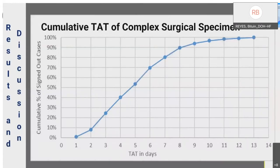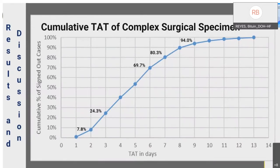Only 8% of complex specimens were signed out in 2 days, 24% in 3 days, 17% in 6 days, 80% in 7 days, and by the 9th day, 94% of complex specimens were signed out. These percentages are lower compared to the CAP Q-CDR measure published in 2019, which recorded 80% of complex specimens signed out in 2 days, and 60% of those with special procedures signed out in 2 days. There was a trend of increasing TAT with an increasing number of special procedures performed.